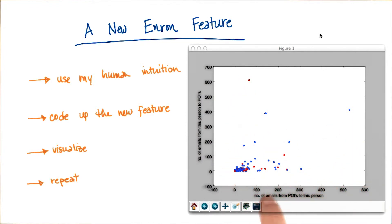Another thing that I notice is that there are a few outliers. Most people, we only have maybe less than 100 emails to or from them. But some people, we have many more than that.